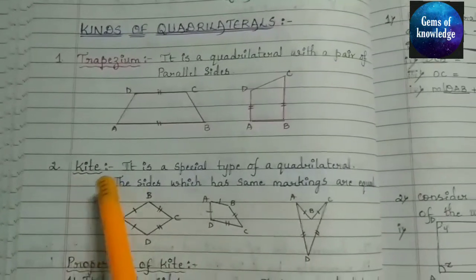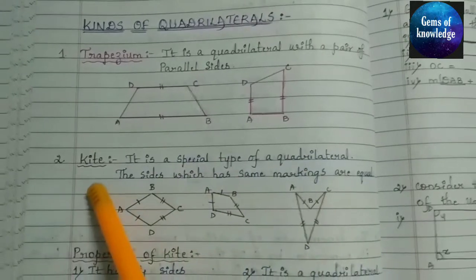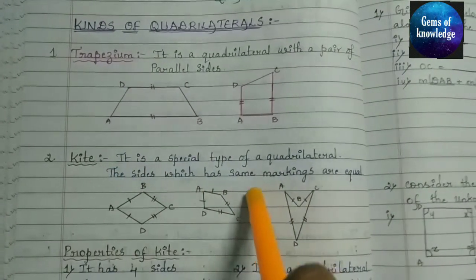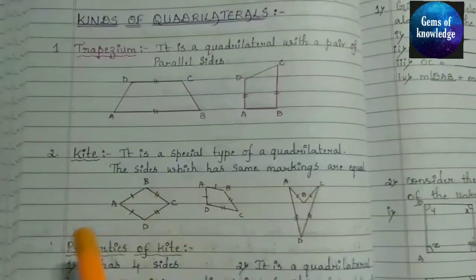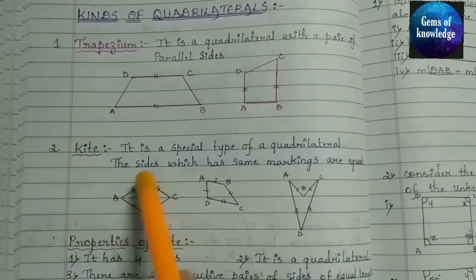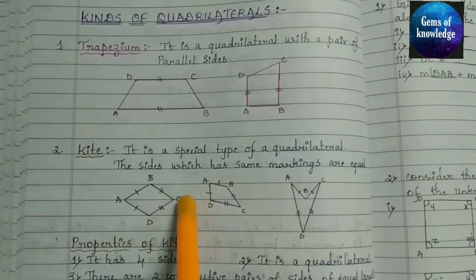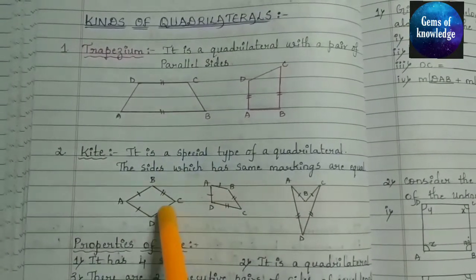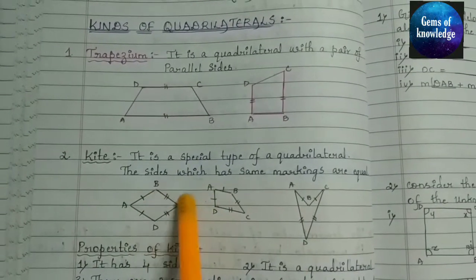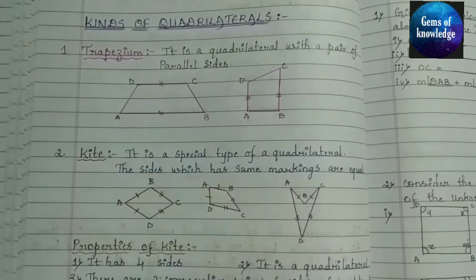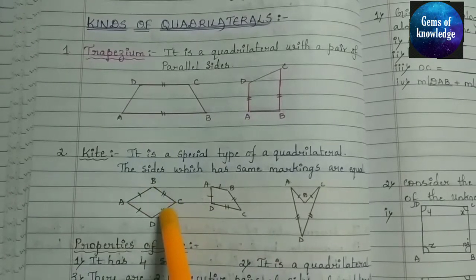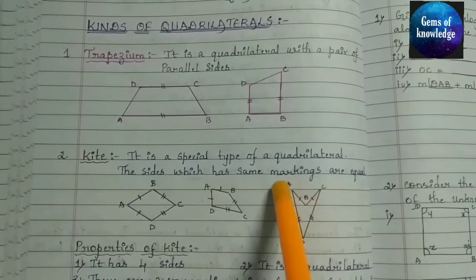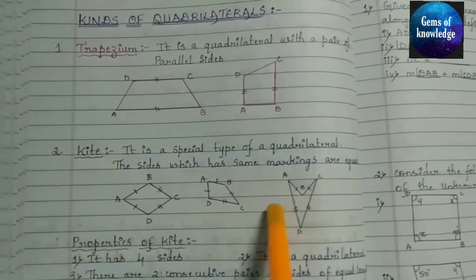Next comes the kite. A kite is a special type of quadrilateral where sides with the same markings are equal. Here AD and AB have single markings, while DC and CB have double markings. This means one pair of adjacent sides are equal: DC equals BC, and AD equals AB. So these two sides are equal and those two sides are equal.